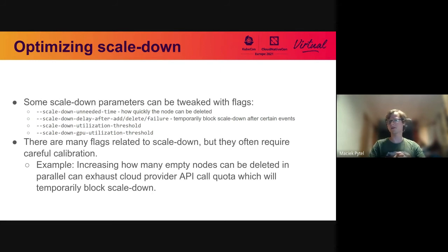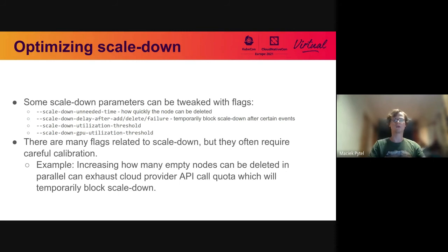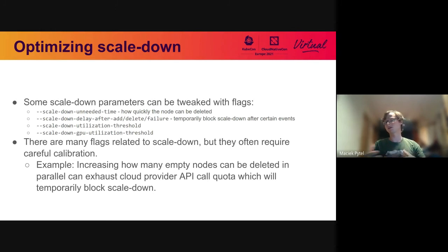One example I've seen is increasing the number of empty nodes that can be deleted in parallel, which in some scenarios can exhaust cloud provider API call quota. This blocks scale-down because Cluster Autoscaler can no longer make API calls and causes other problems — the result may actually be significantly slowing down scale-up and scale-down, which is the opposite of what changing the flag was meant to achieve.